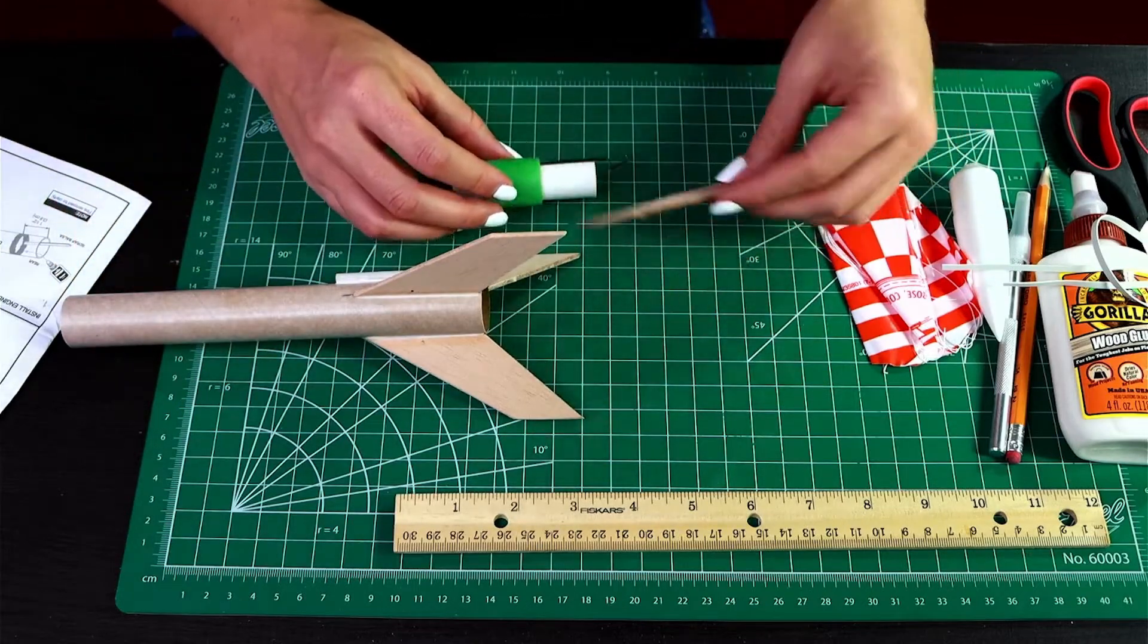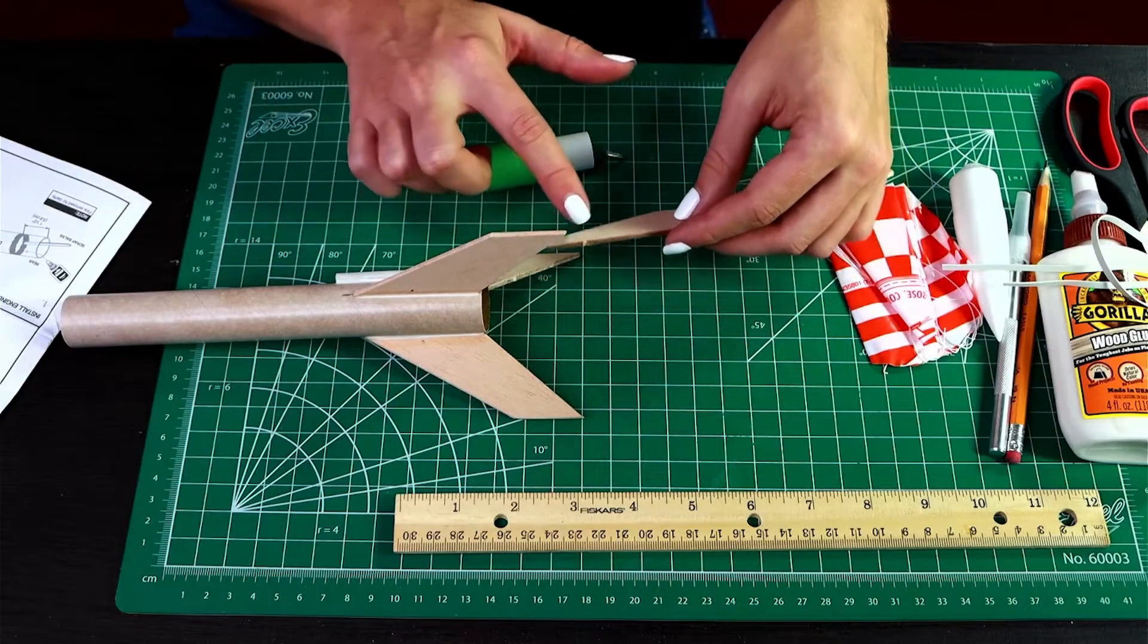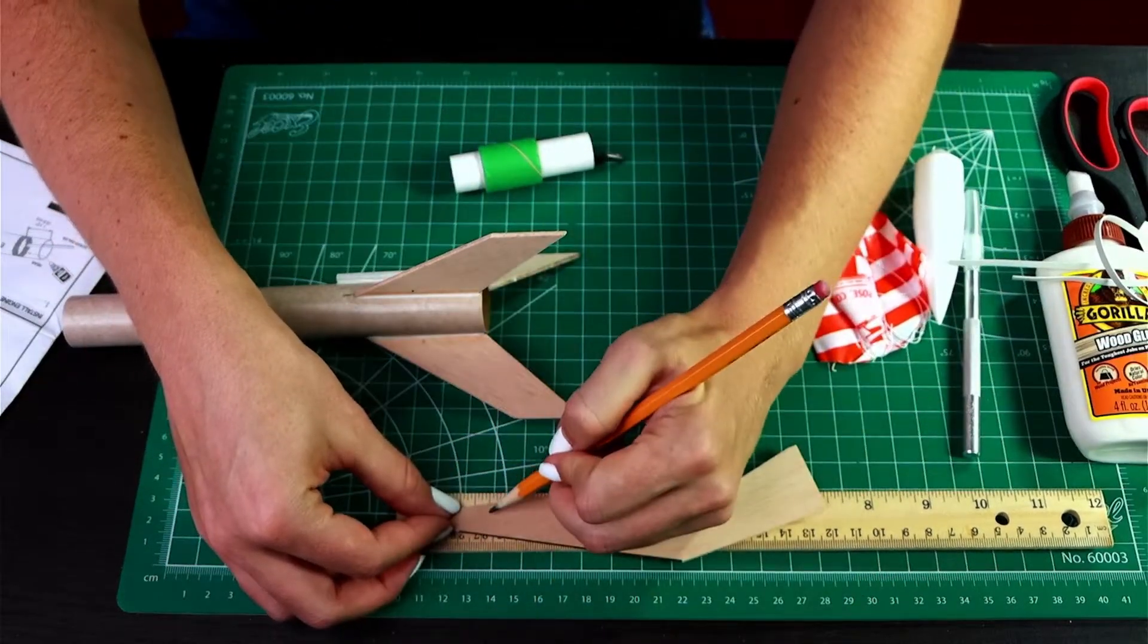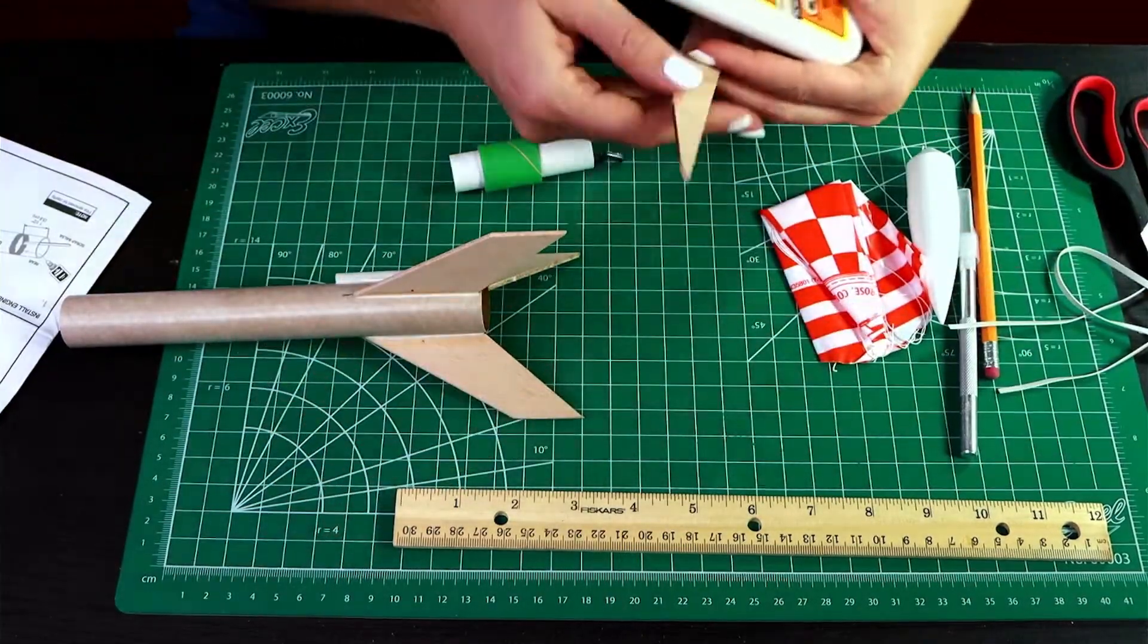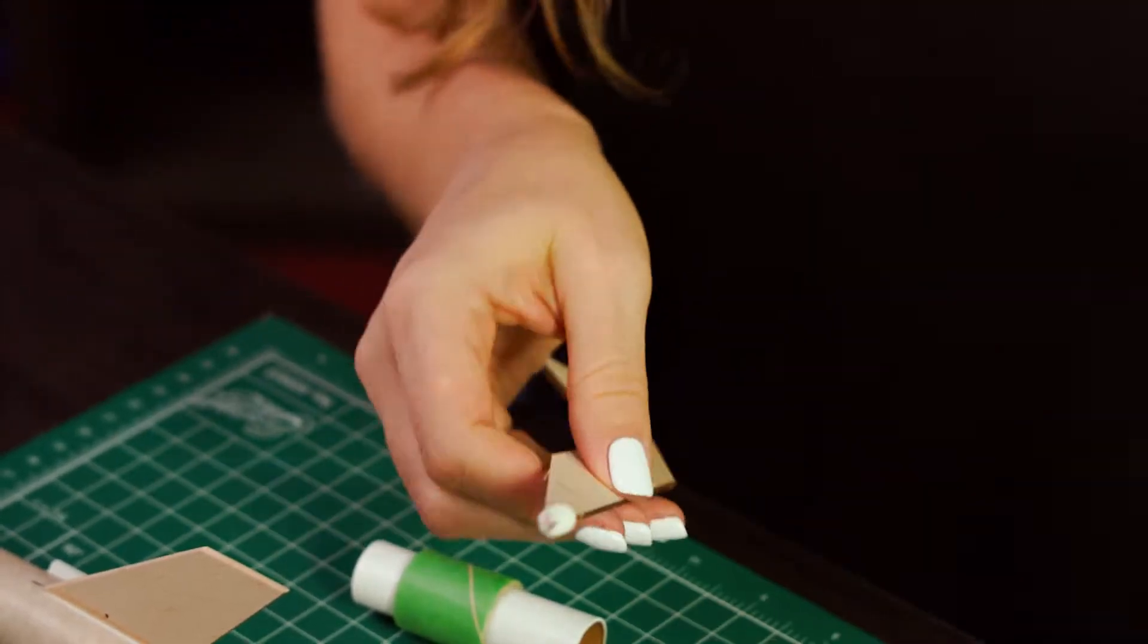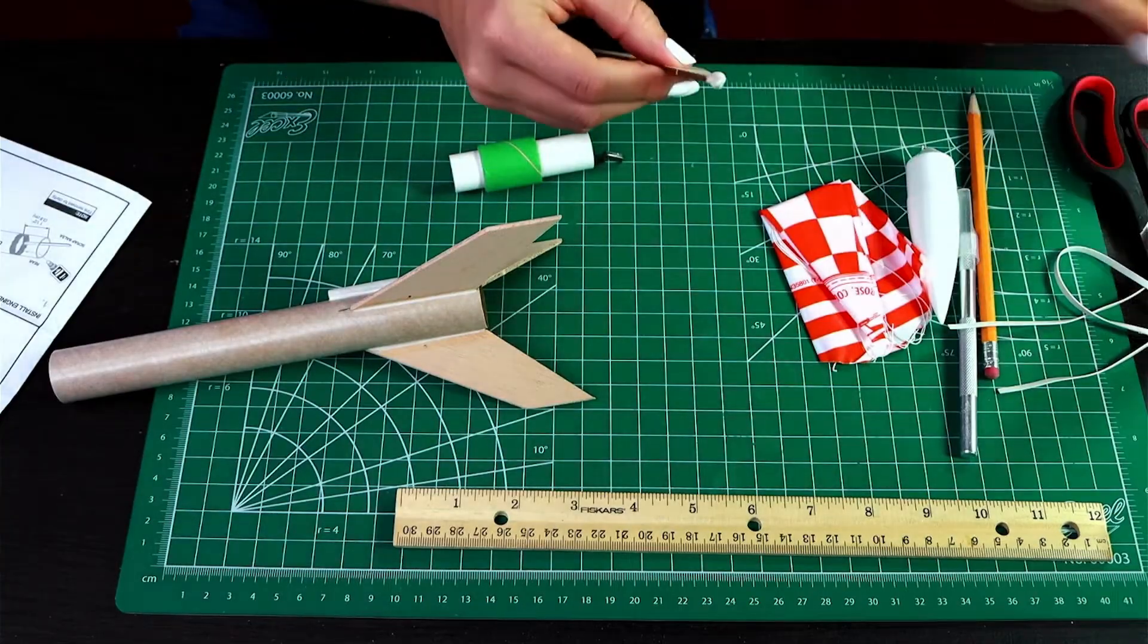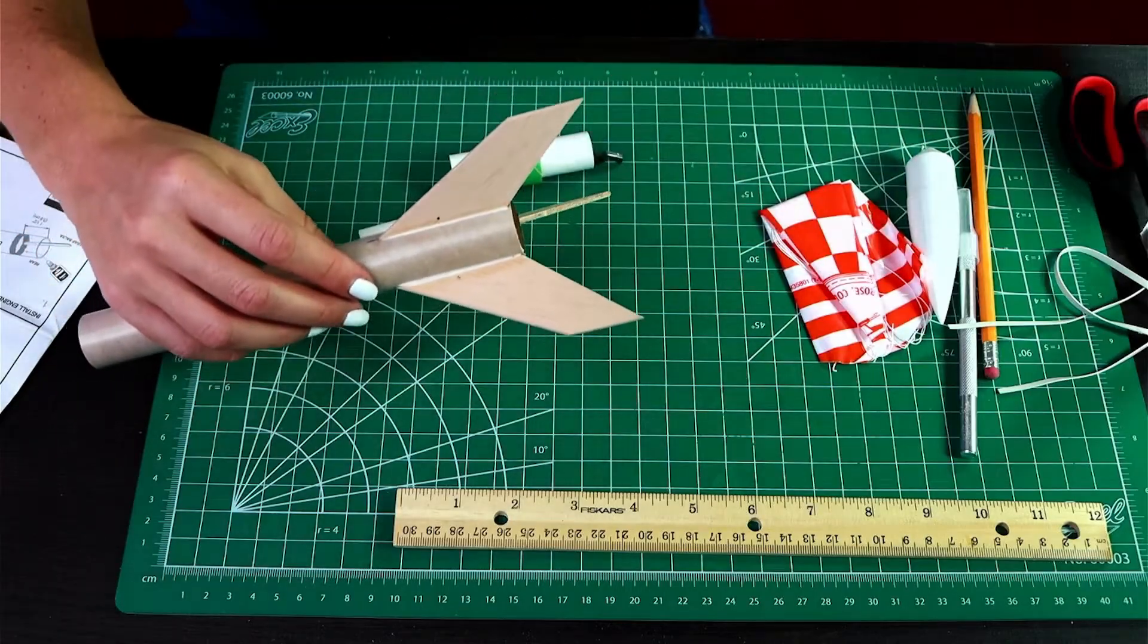And then I'm going to use some scrap balsa to get glue on the inside of the body tube, and the instructions say we want it to be about an inch and a half in. So I'm just going to make a mark on this at about an inch and a half, so I know how far in to put it. All right.